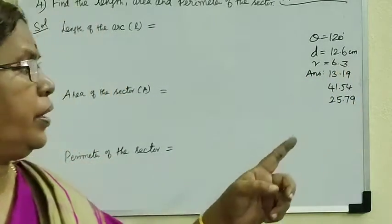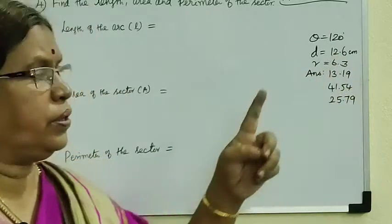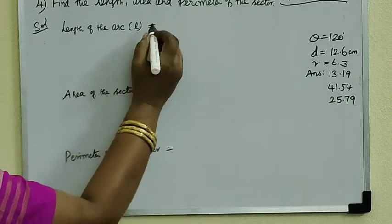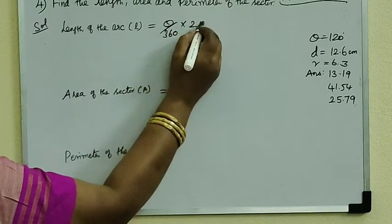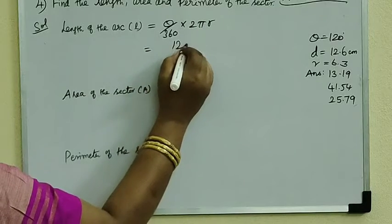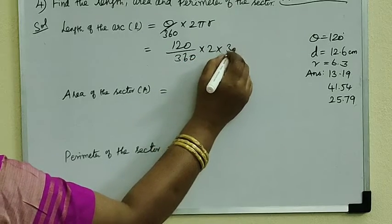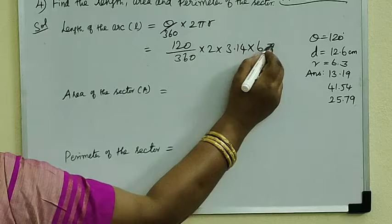12.6, half of the value 6.3. 12 divided by 2 is 6, 6 divided by 2 is 3. Then you want to find length of the arc. Formula: theta by 360 into 2πR. Theta value 120 by 360 into 2 into 3.14, R value 6.3.